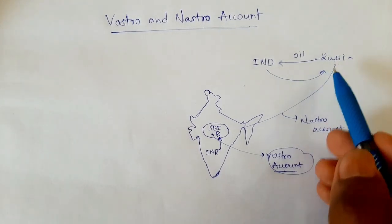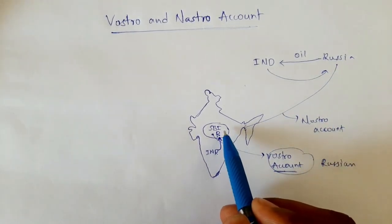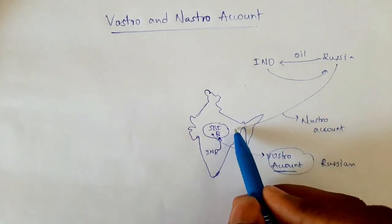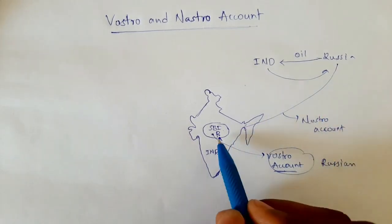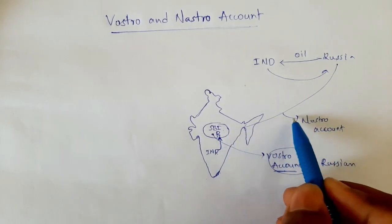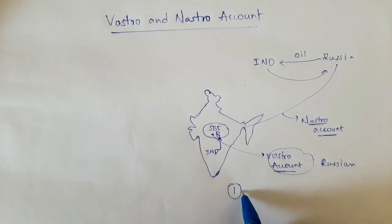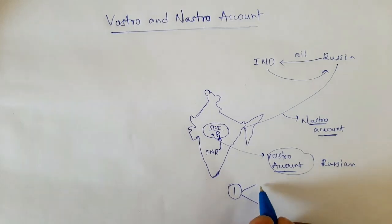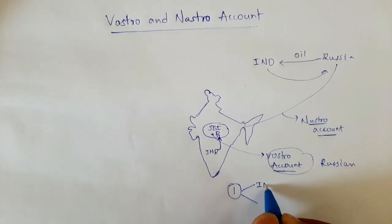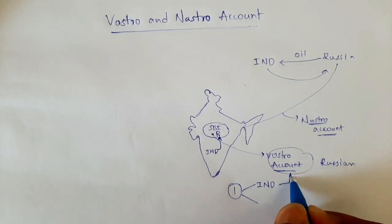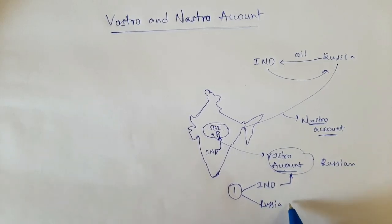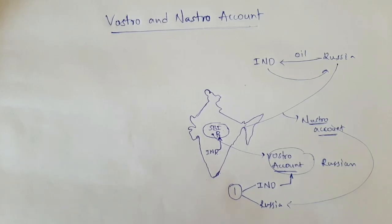For Russia, this is their account held in a foreign country — because for Russia, India is a foreign country. So Russia calls that account a Nostro account. This means there is only one account with two names from different perspectives. For India, this account is a Vostro account; for Russia, this account is a Nostro account. That is what Vostro and Nostro accounts are.